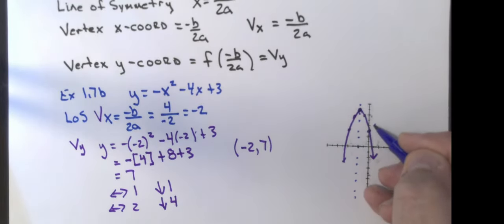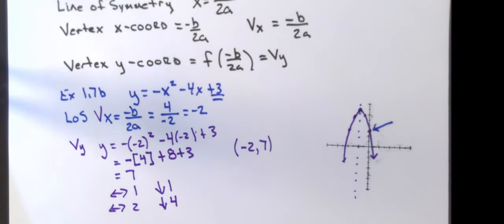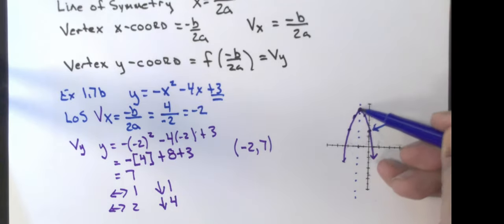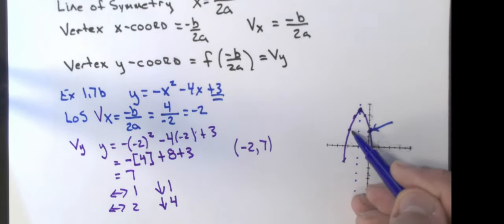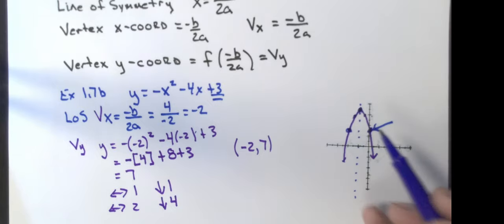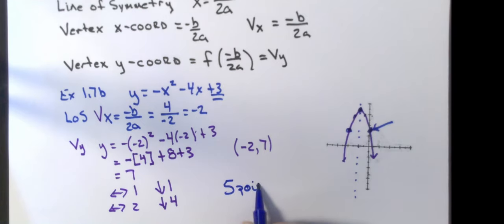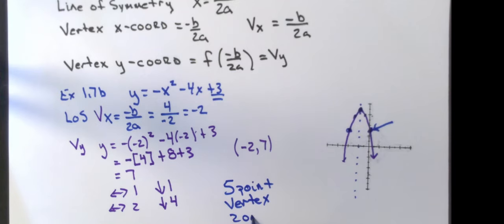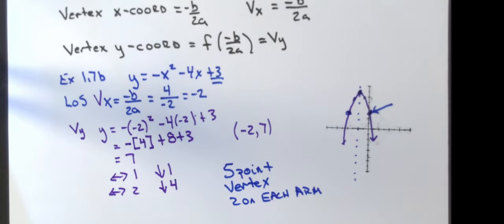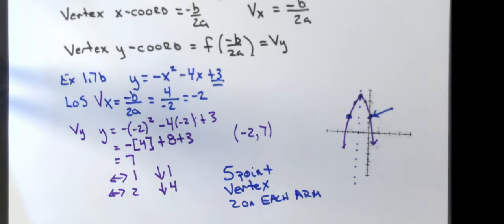One thing to check: the y-intercept is, in fact, 3, which matches c in our equation. Another approach would be to plot the vertex, plot the y-intercept, use symmetry for the mirror point, and then go over 1 down 1. You need 5 points when graphing a quadratic: the vertex, and then 2 points on each arm.